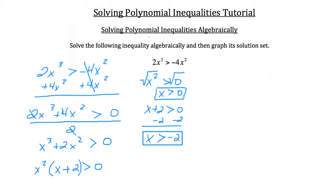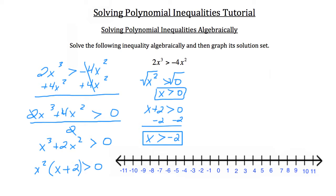Now what we want to do when working with polynomial inequalities is graph them on a number line. Let's plot the points we know: x equals 0 and x equals negative 2. These markers break up our number line into three regions to test — everything to the left of negative 2, between negative 2 and 0, and everything to the right of 0 in the positive direction.